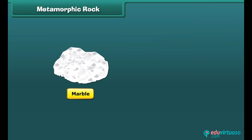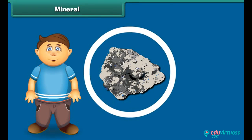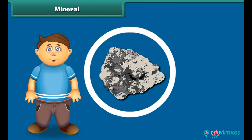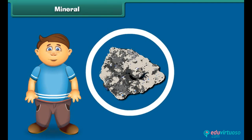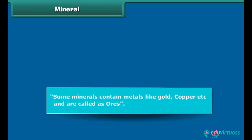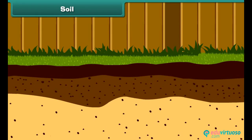Marble and slate are examples of metamorphic rocks. Now let's shift to minerals. Minerals are the materials from which rocks are formed. Minerals contain several important substances. Some minerals contain metals like gold and copper and are called ores. We get metals from these ores.